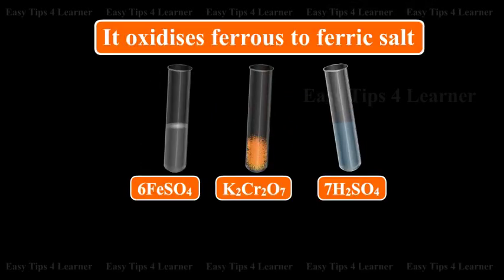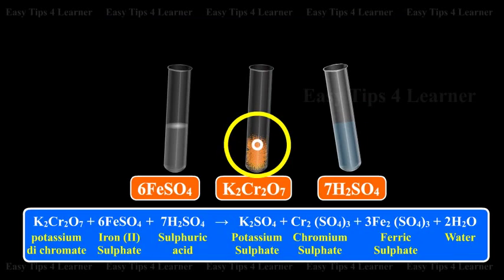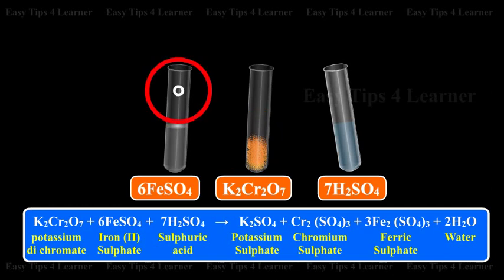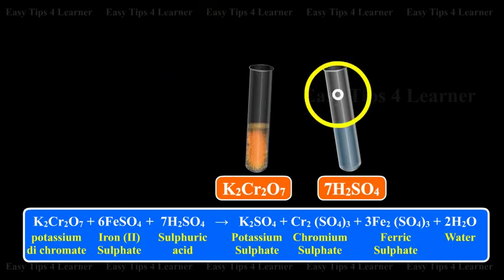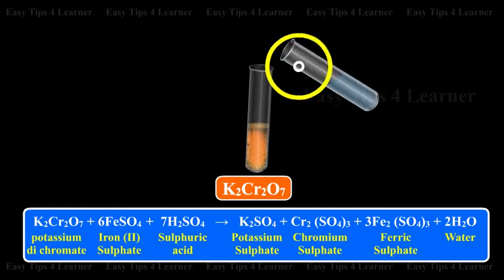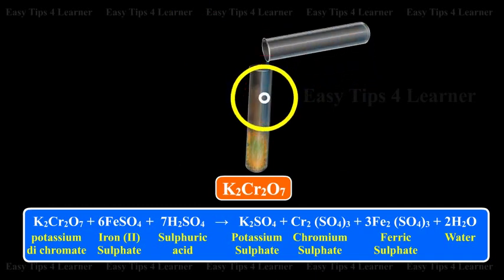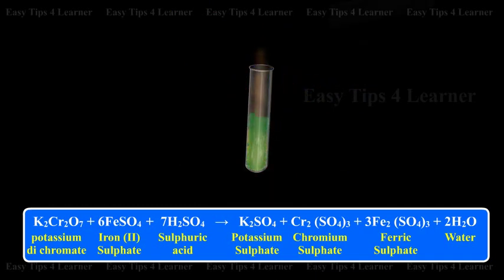It oxidizes ferrous to ferric salt. Potassium dichromate + ferrous sulfate + sulfuric acid gives potassium sulfate + chromium sulfate + ferric sulfate + water.